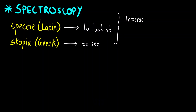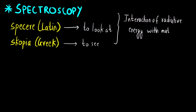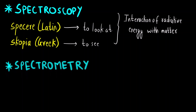Spectroscopy is the interaction of radiative energy — meaning any electromagnetic radiation of the electromagnetic spectrum — that interacts with a particular molecule. Whether absorption or emission will take place, or some molecular motion such as vibration, rotation, or electronic transition — that is what we study in spectroscopy: the interaction of radiative energy with matter, which can be any organic or other molecule.